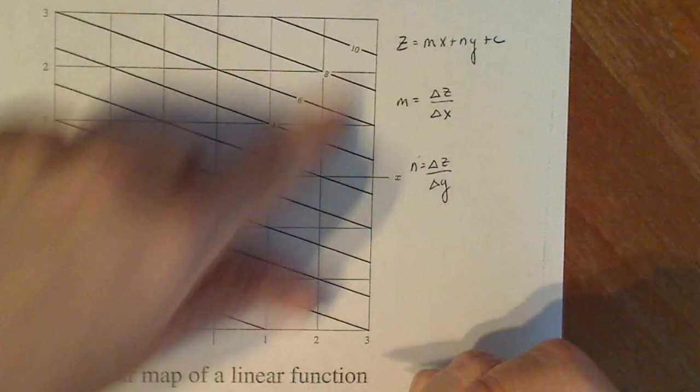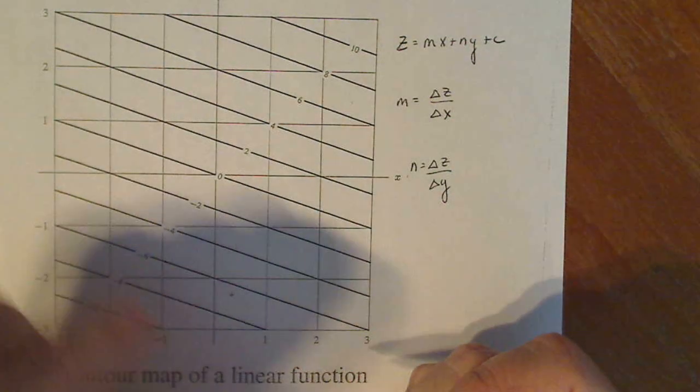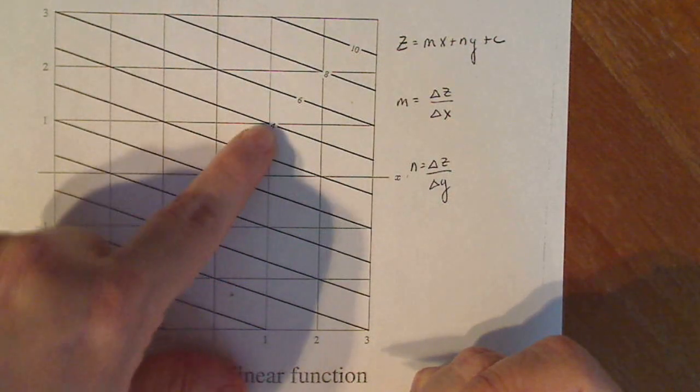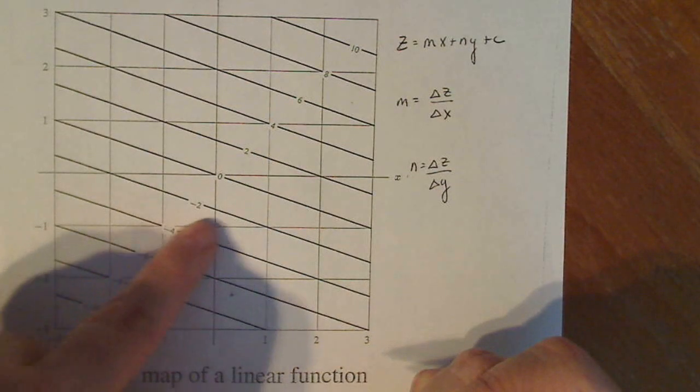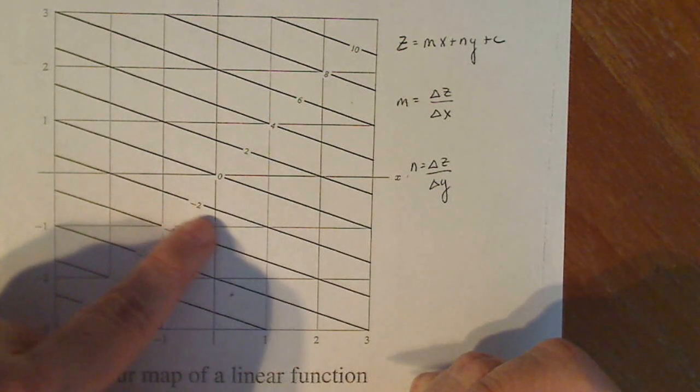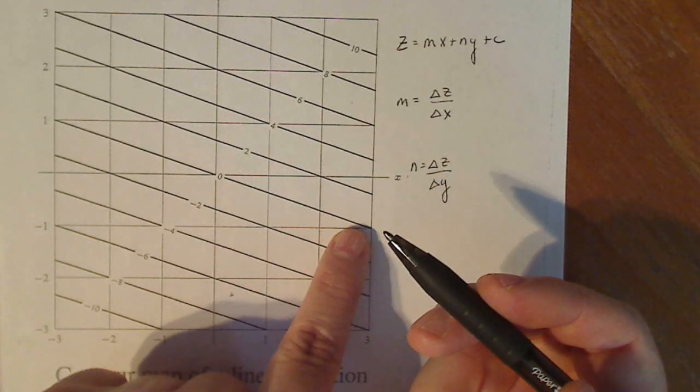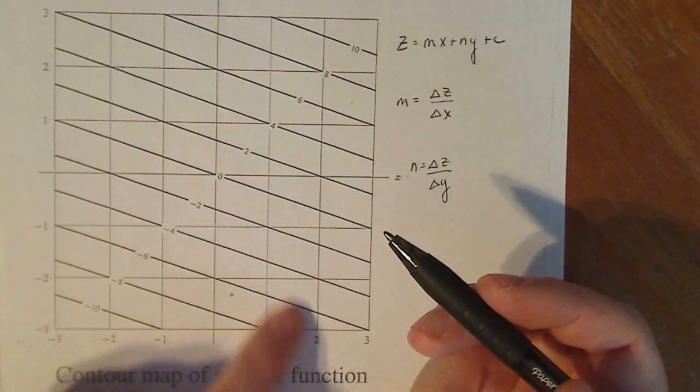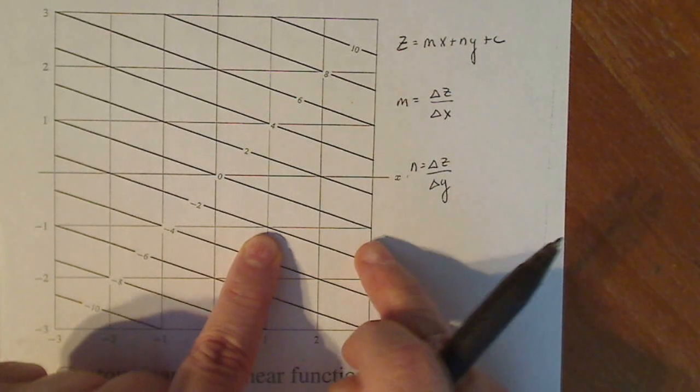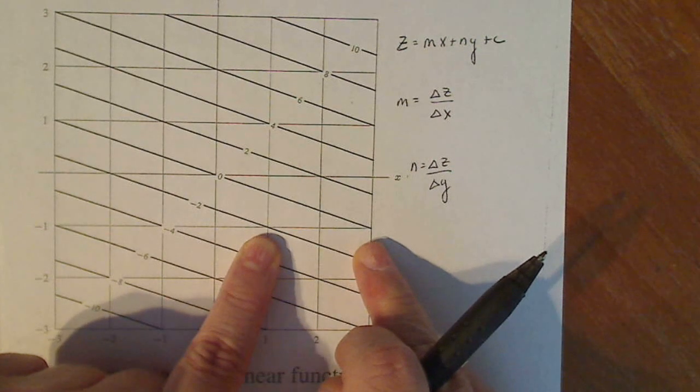Now how you look at this in order to find M and N, you have to see how much Z changes on the contour when I change X. Now notice that I'm changing X for one value of Y. That's how you want to do it. Change X for one value of Y. Now when I do this, I tend to look from corner to corner on the contours. It's not always possible, but it helps.